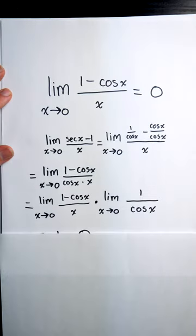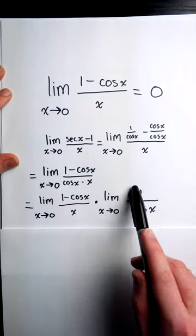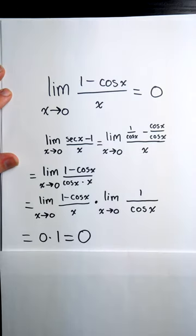And then we can use the limit product law to split it up into a product of this limit, which is 0, and this limit. Plug in 0 in the denominator and we find it's equal to 0.